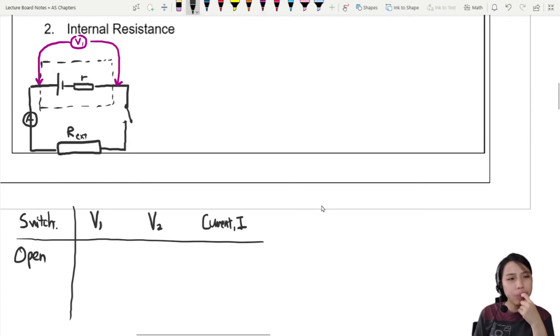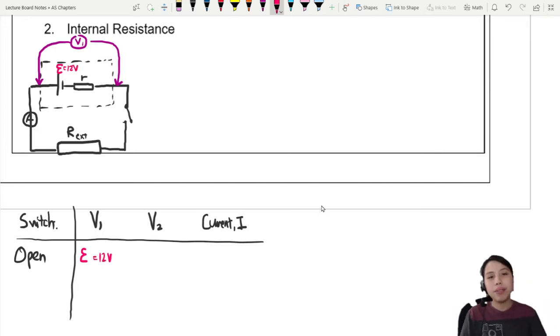Current, we use a symbol I. So current flowing in the circuit. Usually we measure that with an ammeter. So let's add an ammeter right there. I think our table is ready. So what happens when the switch is open? V1, what is it going to measure? It's going to measure just the EMF. So I guess you just measure EMF. A reminder that this is measuring terminal potential difference.